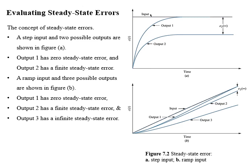Now we will study the concept of steady-state error. A time response of a system is given in figure A, to which a step input is applied. For this step input we have two possibilities. If the output tracks the desired input, then we will have zero steady-state error — output one is following the input with no difference. If we look at output two, there is a constant difference between input and output two in steady-state, so we will have a finite steady-state error.